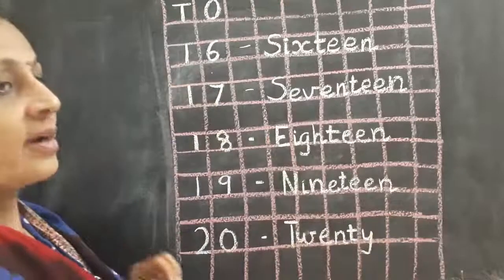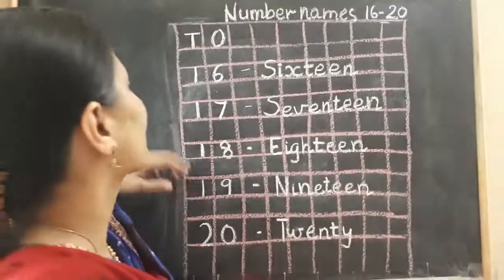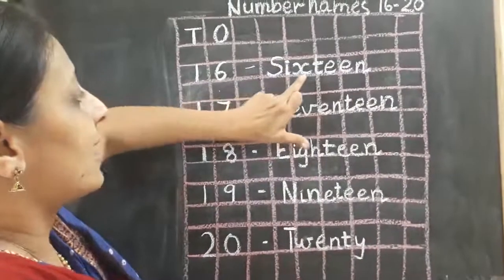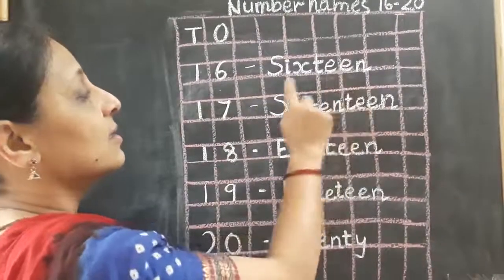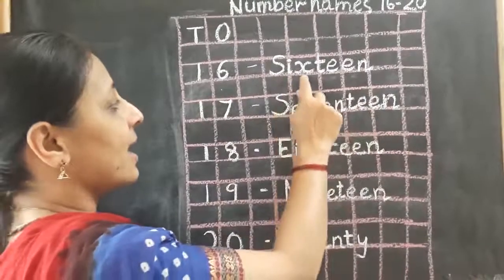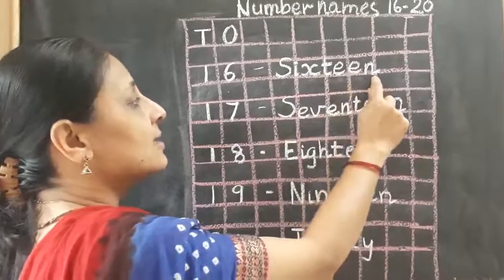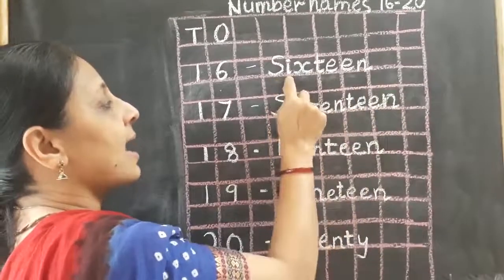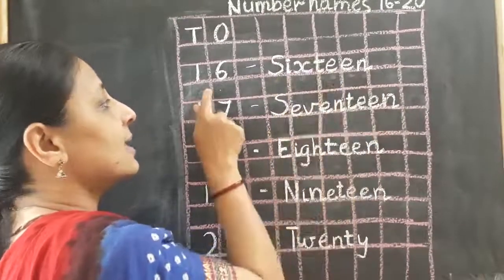Yes children, shall we repeat once again? 16 — S, I, X, T, E, E, N. 16. Once again: S, I, X, T, E, E, N. 16.